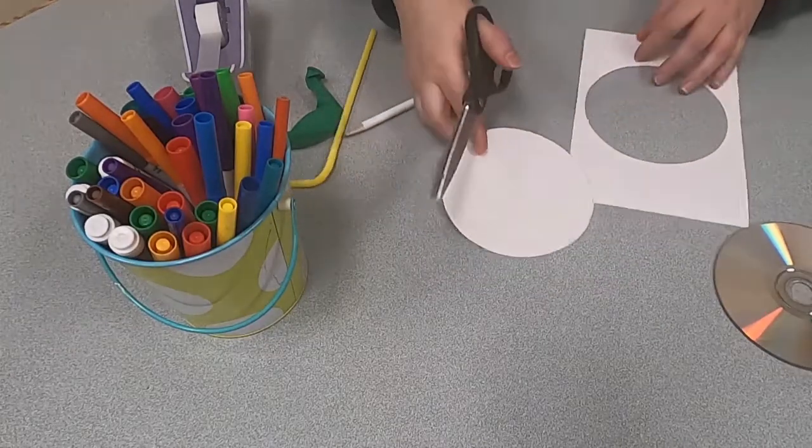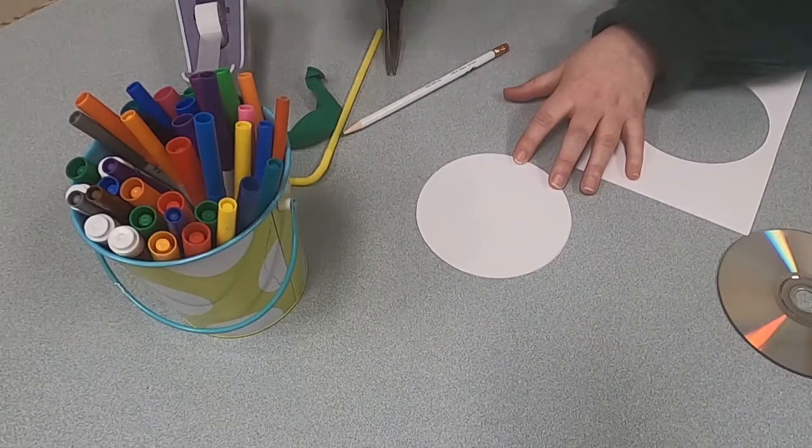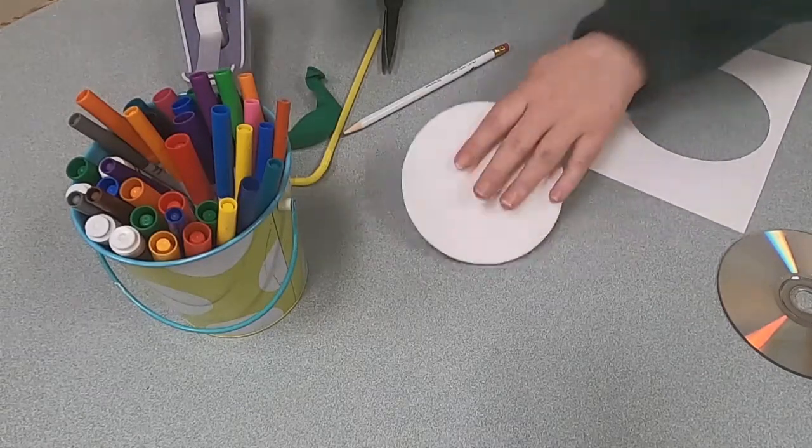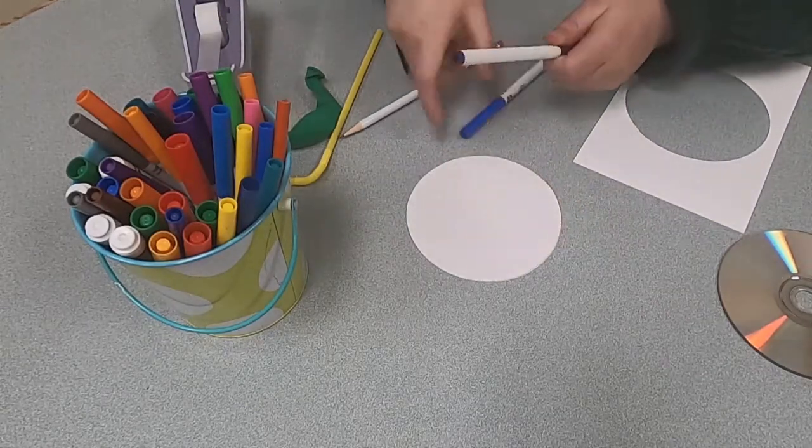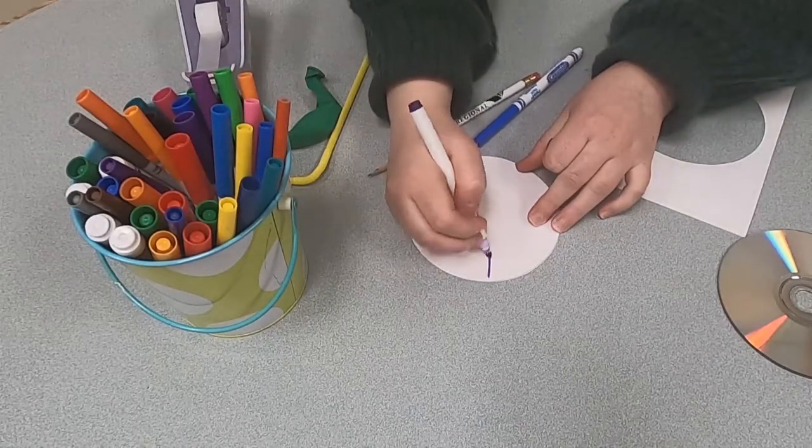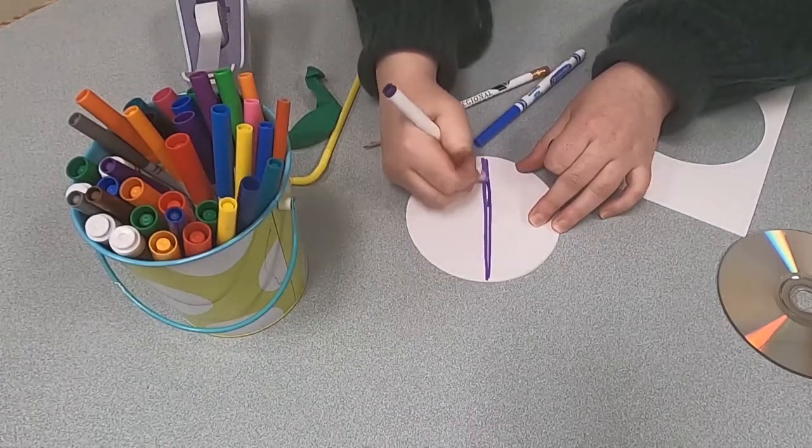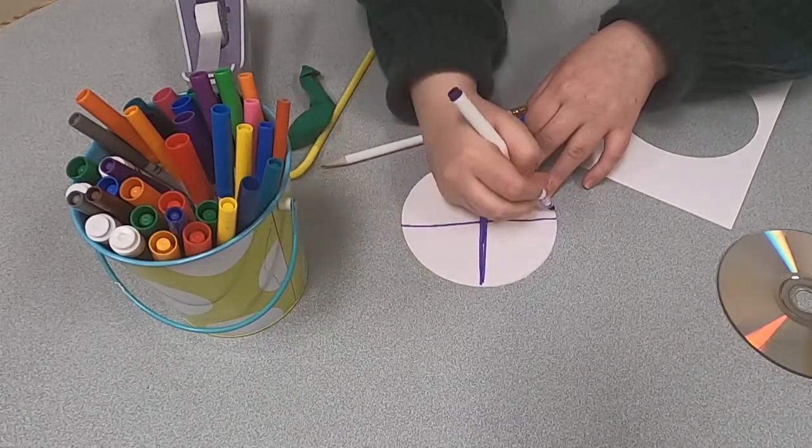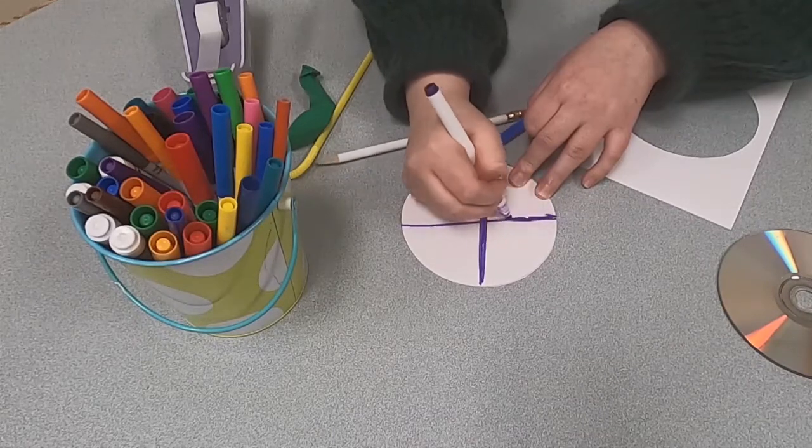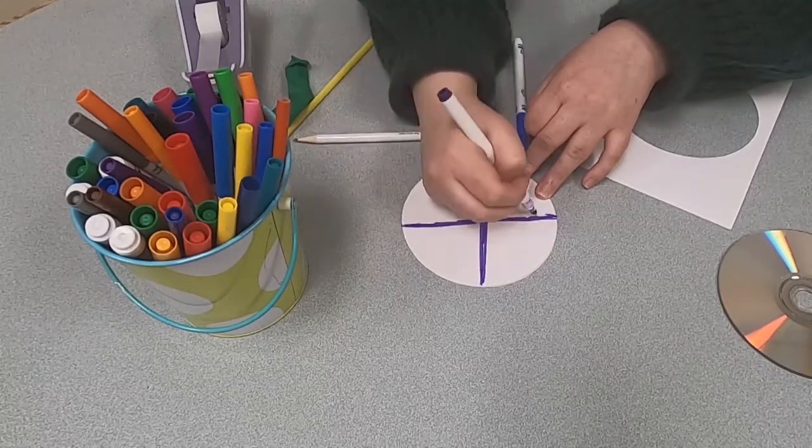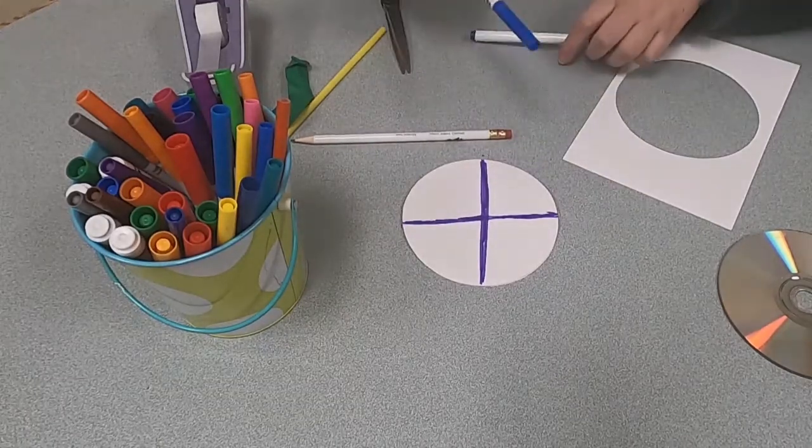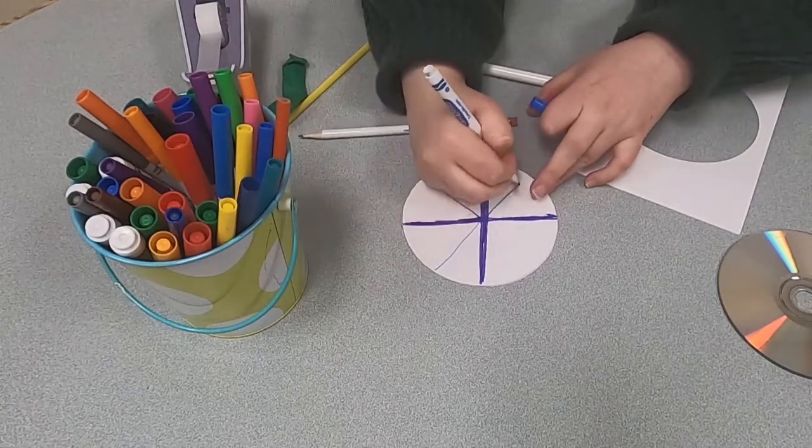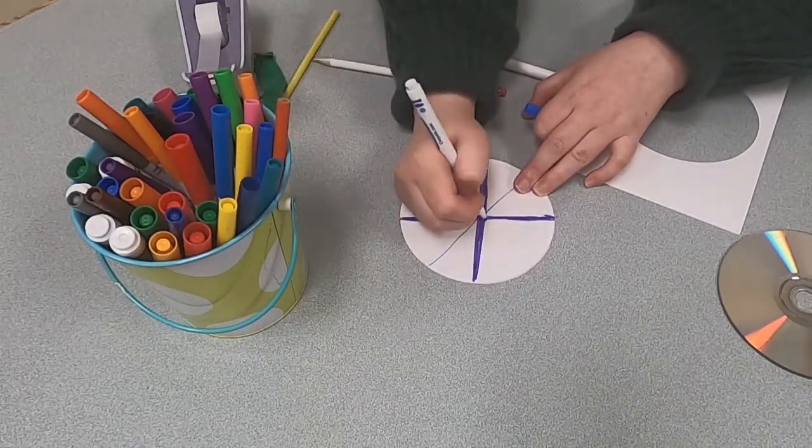And before we do our next step you can, if you want to, color your circle whatever color you want. I have some markers here. I'm just going to make a couple stripes. You can do it on one side or you can flip it over and do it on both sides. It's whatever you would like to do. And so I'm just going to make just a couple marks here, and I'll do one across. Just because purple is actually one of my favorite colors, so that's why I chose that. And then let's do some blue. And there we go.